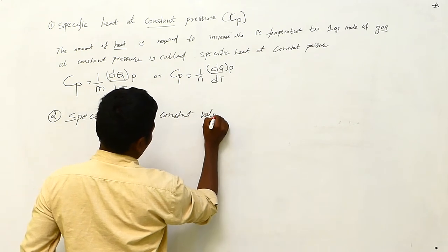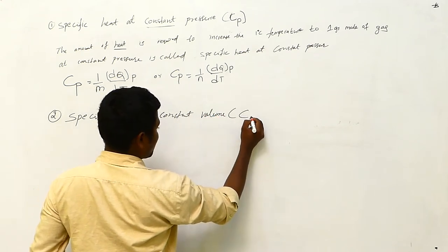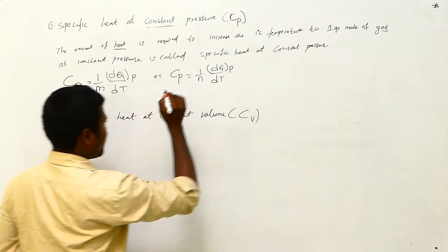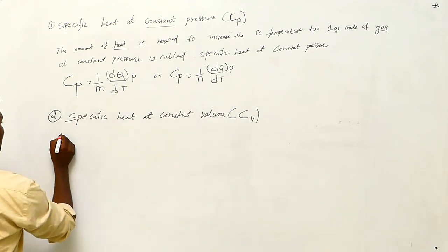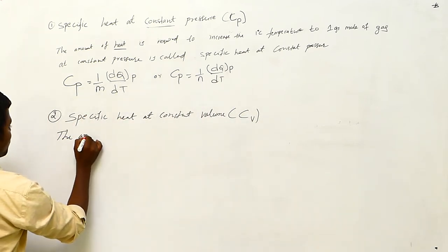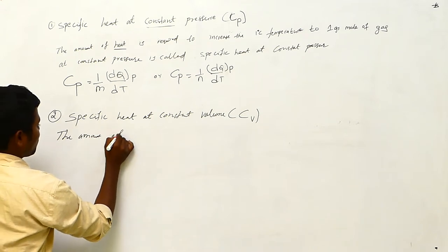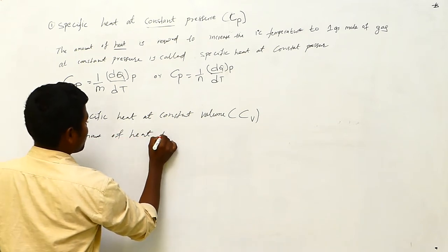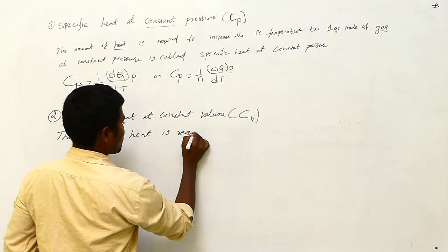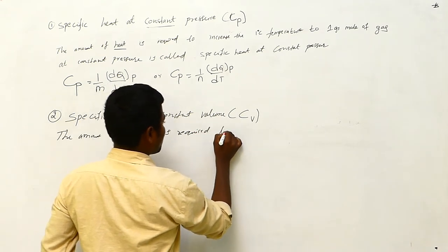The second one is specific heat at constant volume. Constant volume means we denote it by C_V — C for specific heat, V for constant volume. The amount of heat required to increase the temperature by one degree centigrade...